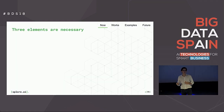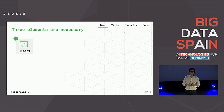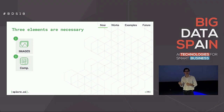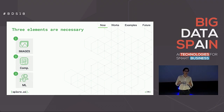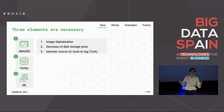Let me start with why now. There are three elements in computer vision: first, images; second, computing power; and third, machine learning. The evolution of these three elements until today is what makes this possible.